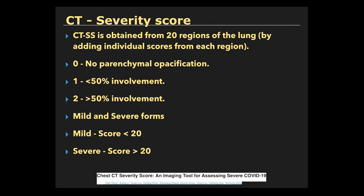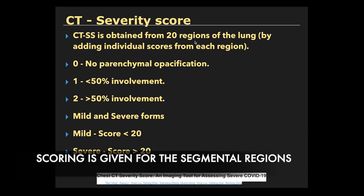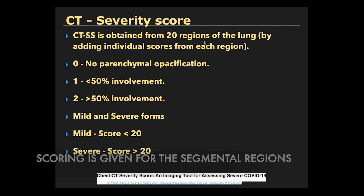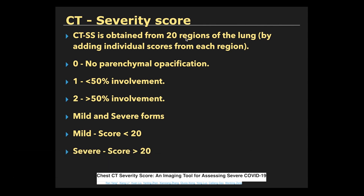To calculate CT-CVRT scoring using the segmental method: the right lung has 10 segments and the left lung has 8 segments, but for calculating CT-CVRT score we consider the left lung also has 10 segmental regions. The apicoposterior segment of the left upper lobe is subdivided into apical and posterior segmental regions, and the anteromedial basal segment of the left lower lobe is subdivided into anterior and medial basal regions.